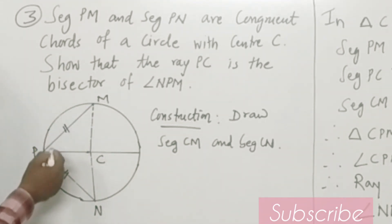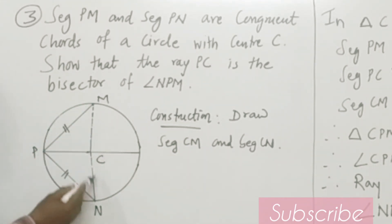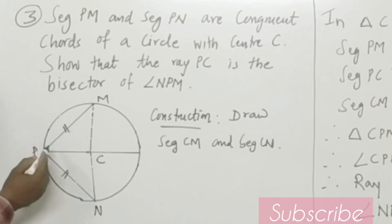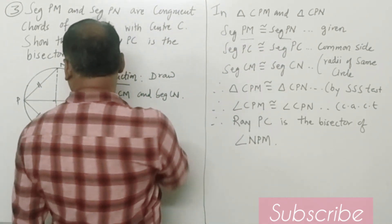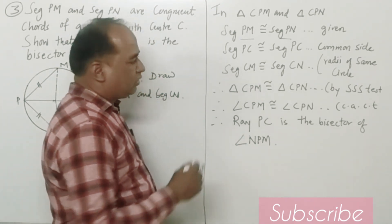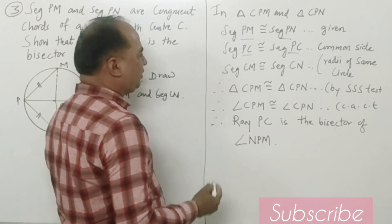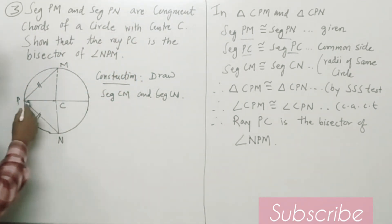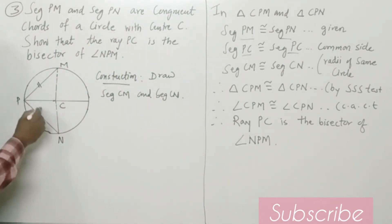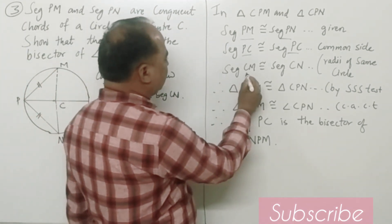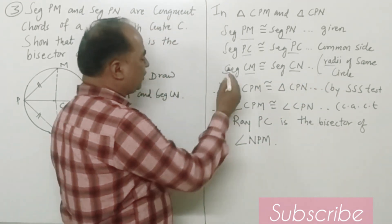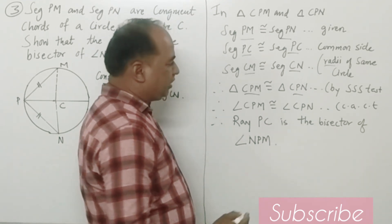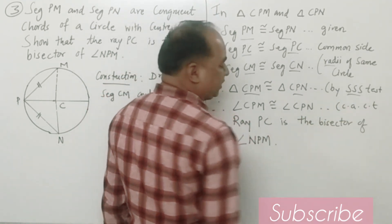Now there are two triangles — triangle CPM and triangle CPN. In these two triangles: segment PM is congruent to segment PN, as both are congruent chords given. Segment PC is congruent to segment PC, as it is the common side in both triangles. And segment CM is congruent to segment CN, as both are radii of the same circle. Therefore, triangle CPM is congruent to triangle CPN by the side-side-side test of congruence.